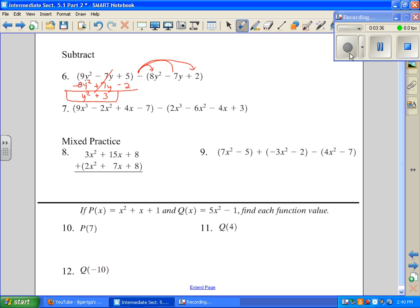On number 7, I want to do the same thing. I want to distribute the negative here and line them up as I go. Negative 2x cubed. A negative times a negative is a positive 6x squared. A negative times a negative is a positive 4x. And then minus 3. When I add down, I'm going to get 7x cubed plus 4x squared plus 8x minus 10.